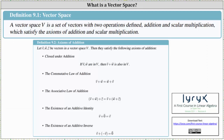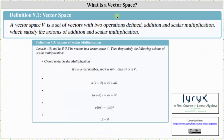Now let's take a look at the five axioms of scalar multiplication, where A and B are real numbers, and vector V, vector W, and vector Z are vectors in the vector space. First, we have closed under scalar multiplication, which means if A is a real number and V is in the vector space, then A times vector V is also in the vector space. Next, A times the sum of vector V and W is equal to A times vector V plus A times vector W.